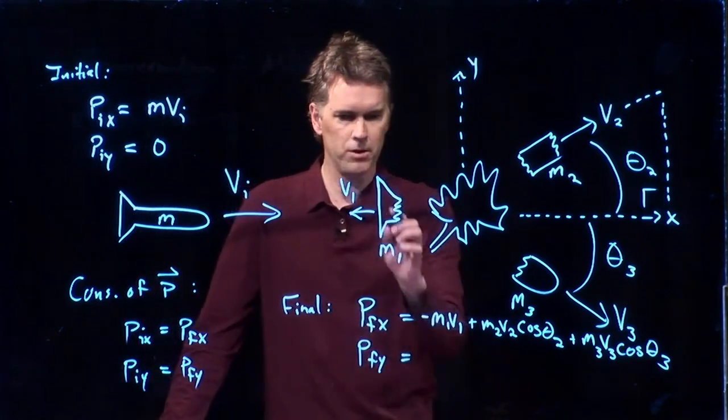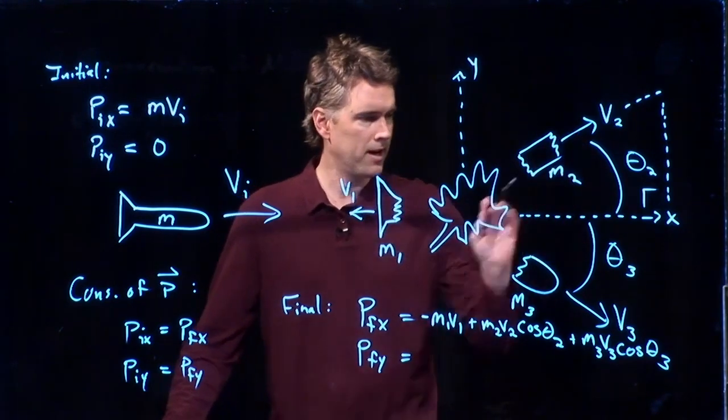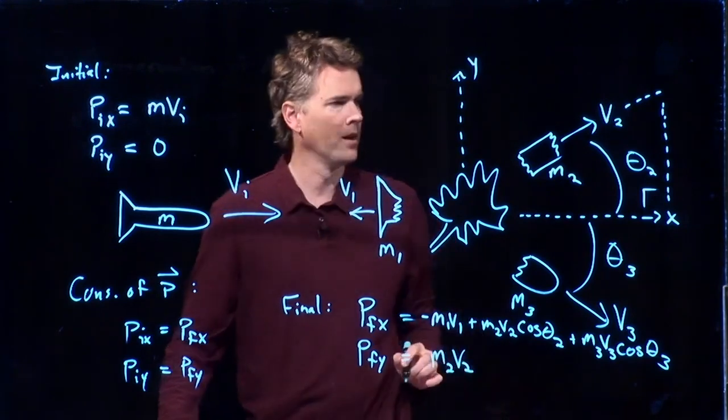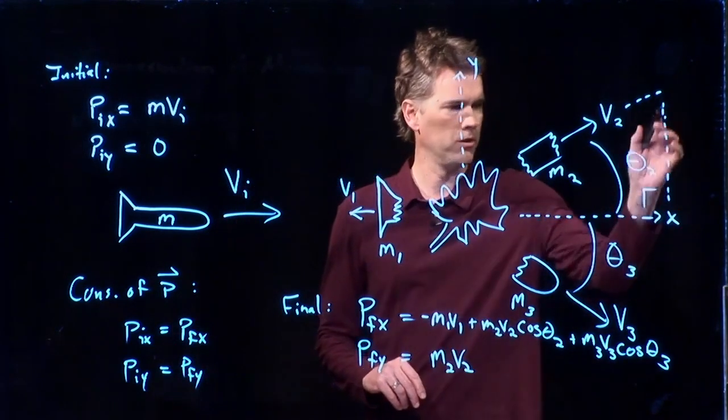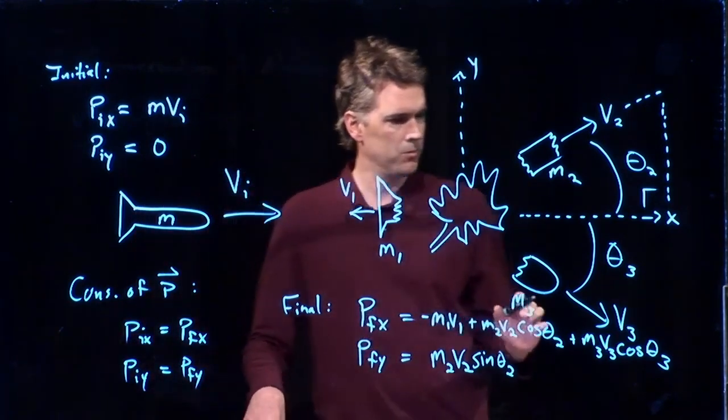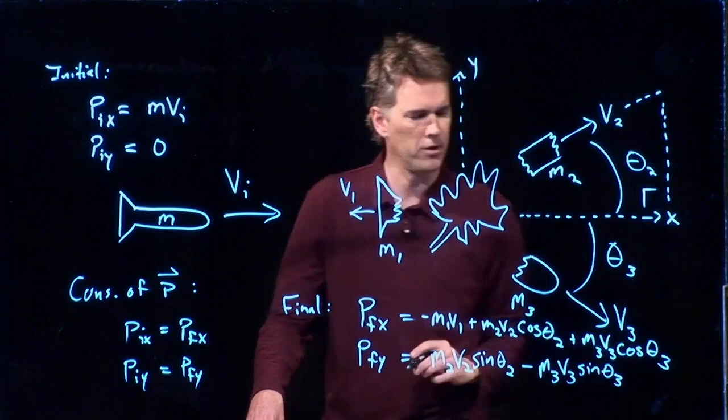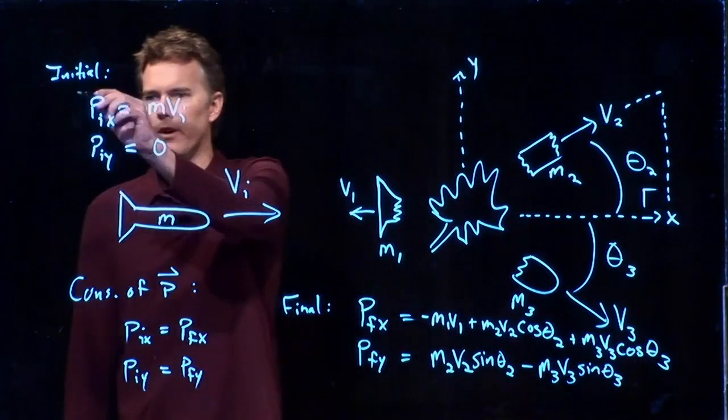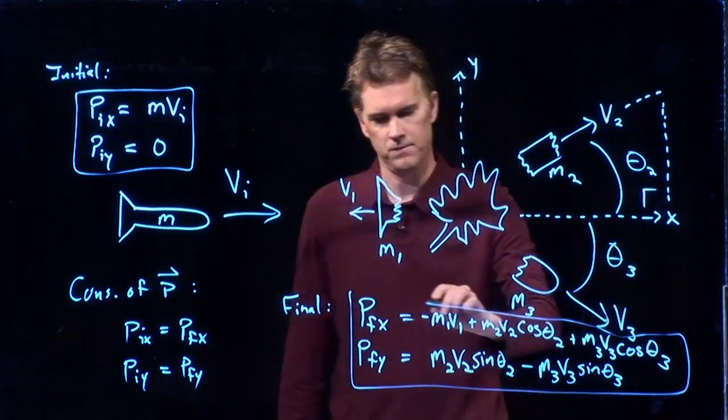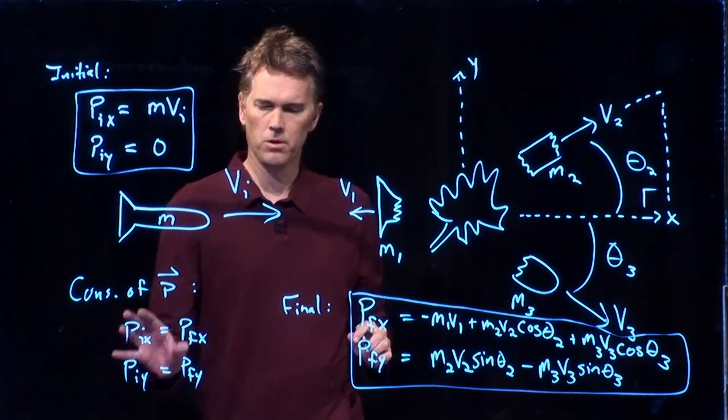Now for the y, what do we have? Well, this one is perfectly horizontal, we said, so there's no contribution from this one in the y. But both of those have some contribution in the y, and it looks like we're going to have M2 V2. Since we used cosine before, we're going to use sine, which is this side of the triangle, and that's going up, so we keep everything positive. And we have M3 V3 going down, so we put a negative sign in front of it. So these are the important conditions. There's our initial conditions, here are the final conditions, and we need to satisfy conservation of momentum by setting them equal according to this.